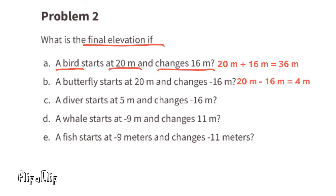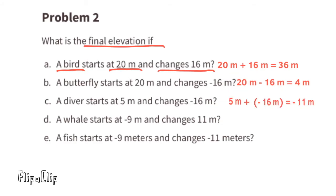Part C: a diver starts at 5 meters and changes negative 16 meters. We can write this as 5 meters plus negative 16 meters equals negative 11 meters. We can also write this as 5 meters minus 16 meters equals negative 11 meters. The elevation of the diver would be negative 11 meters.